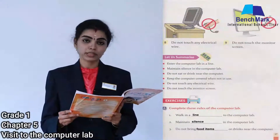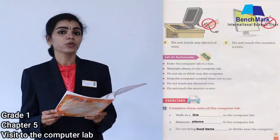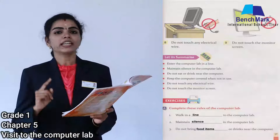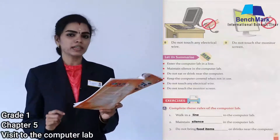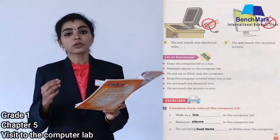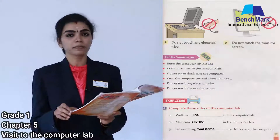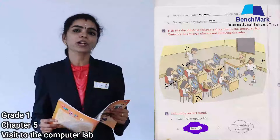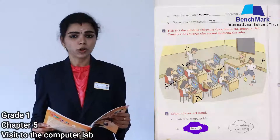The first exercise is to complete the rules of the computer lab. 'Walk in __ to a computer lab' — you should walk in a line. 'Maintain __ in the computer lab' — maintain absolute silence. 'Don't drink __ or drinks near the computer' — do not carry food items or drinks inside the computer lab. 'Keep the computer __ when not in use' — cover your computer. Don't touch any electrical wire, because if you do you may get a shock.